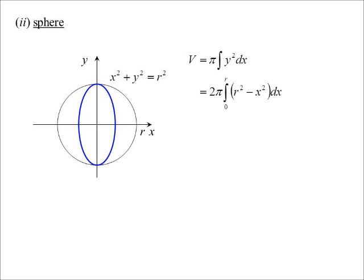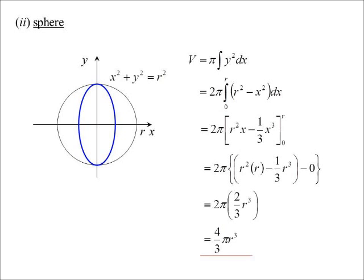So π times the integral of y² dx will go from, well, I'm going to use the symmetry of the shape. I'm going to go from 0 to r, but say it's going to be twice that, of (r² - x²) dx. Add one to the power over the power, so we get r²x - (1/3)x³, sub r in, and there's our familiar formula, (4/3)πr³.